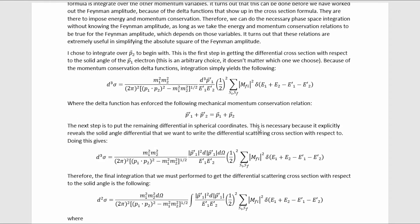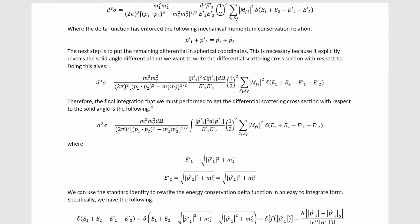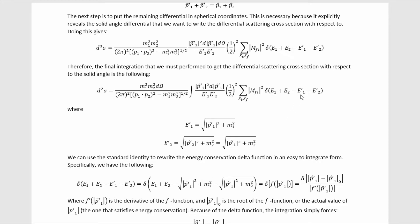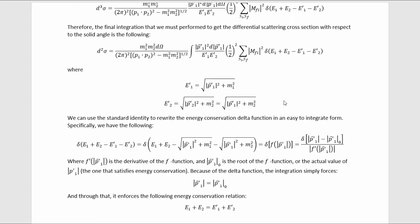The next step is to put the remaining differential in spherical coordinates, which explicitly reveals the solid angle differential we want. The final integration to get the differential scattering cross-section with respect to solid angle involves two energy terms depending on the integration variable, where these are constants. The relation from the center of mass frame is applied here — this is the first of the two ways we use the center of mass frame before picking our parameterization.